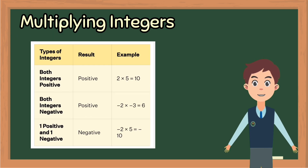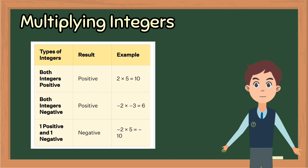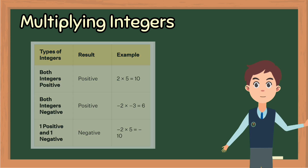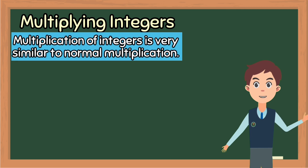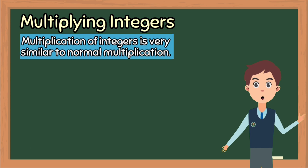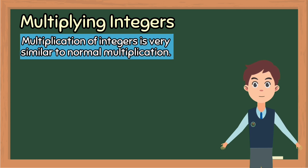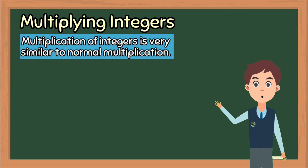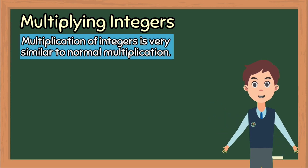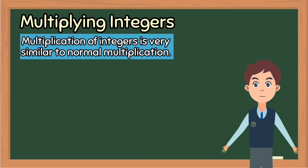The table given shows the rules and examples for multiplying integers. Multiplication of integers is very similar to normal multiplication. However, since integers deal with both negative and positive numbers, we have certain rules or conditions to remember while multiplying integers, as we saw in the previous section.